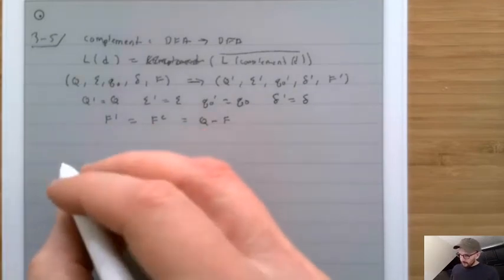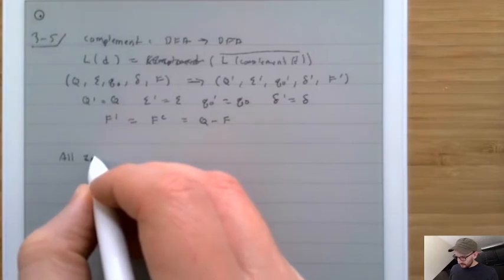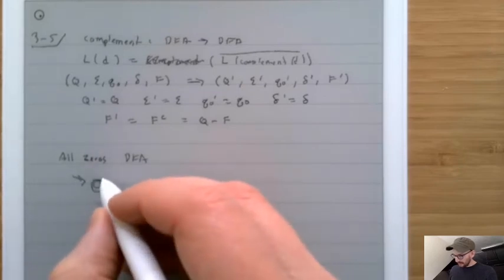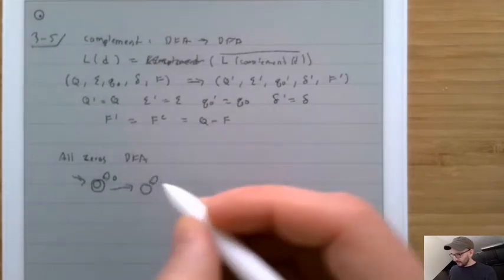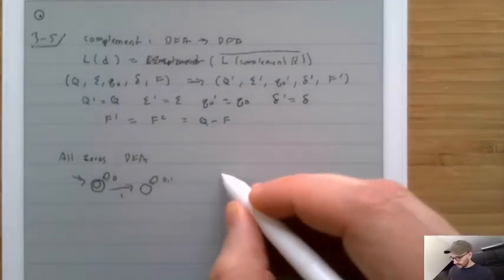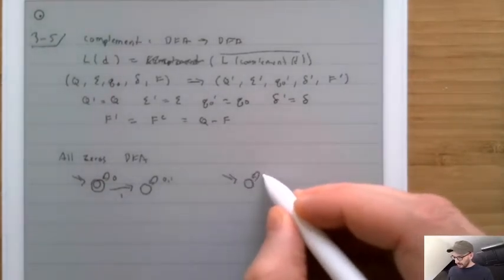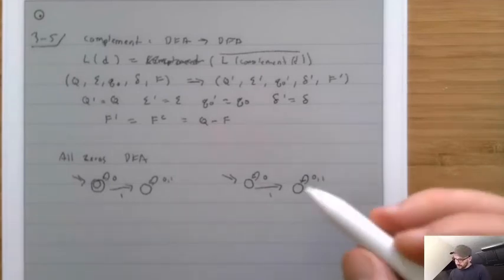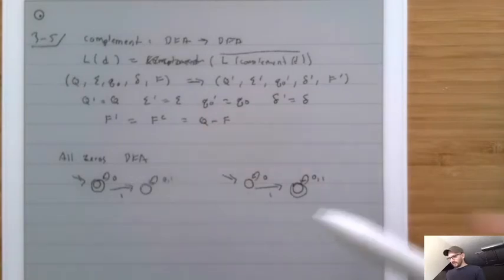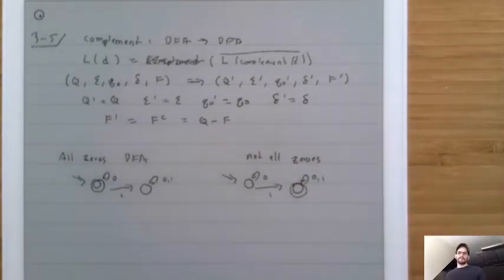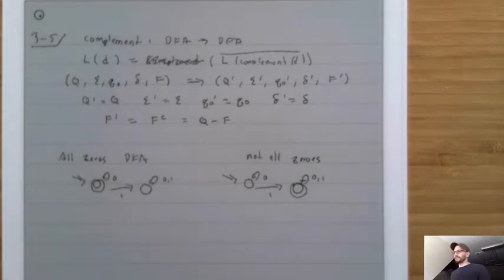For example, take the all-zeros DFA: it accepts the empty string and any string of zeros, going to a reject state on a 1. Its complement has the same arrows but different accepting states — the previously non-accepting state is now circled. This complement is the 'not all zeros' DFA: it says yes whenever there is at least one 1 in the string, and the empty string is not accepted.